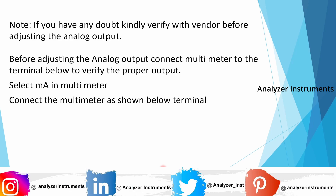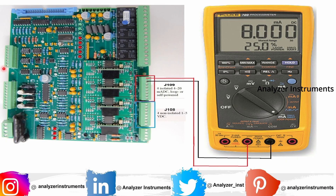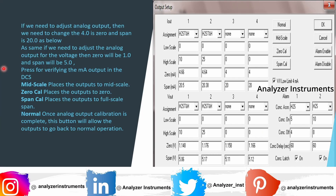Before adjusting the analog output, if you have any doubts, kindly verify with the vendor. Connect the multimeter to the terminals so we can observe the analog output values. Connect the multimeter as shown in the figure — the first two terminals on J109 are for H2S current output, and the first two terminals on J108 are for H2S voltage DC output. Do not interchange the positive and negative terminals. Connect the multimeter as shown for verification.